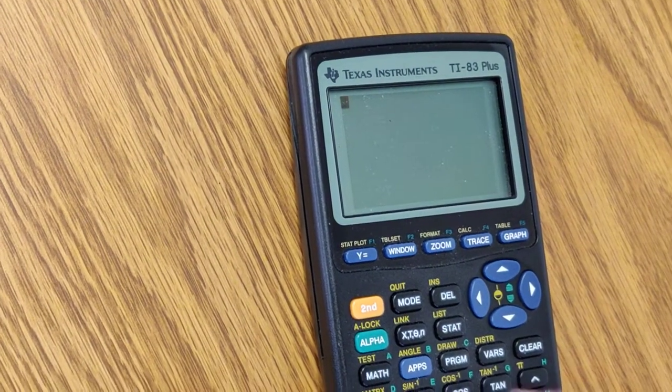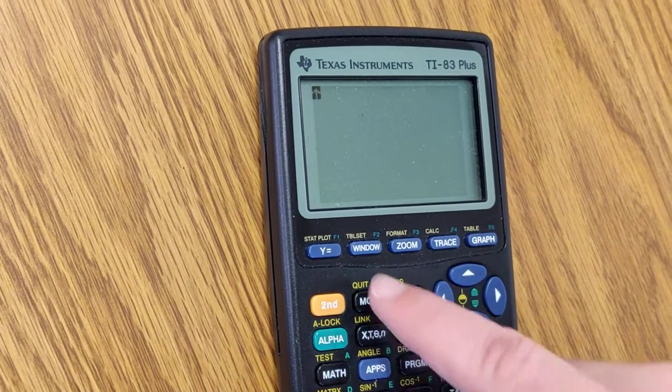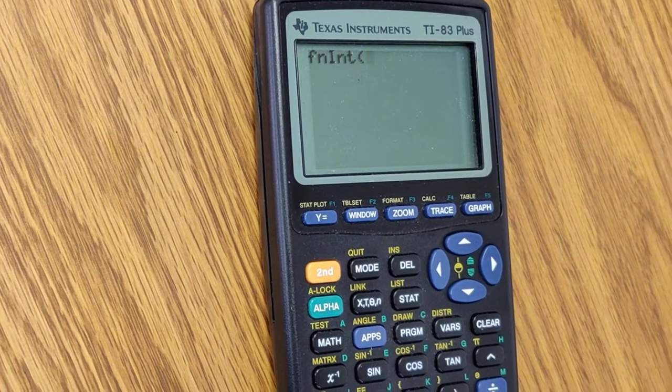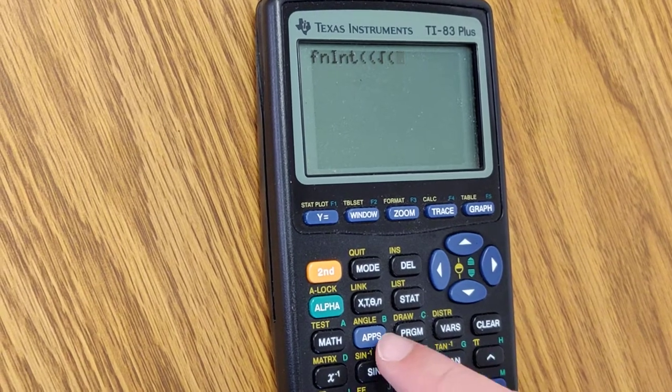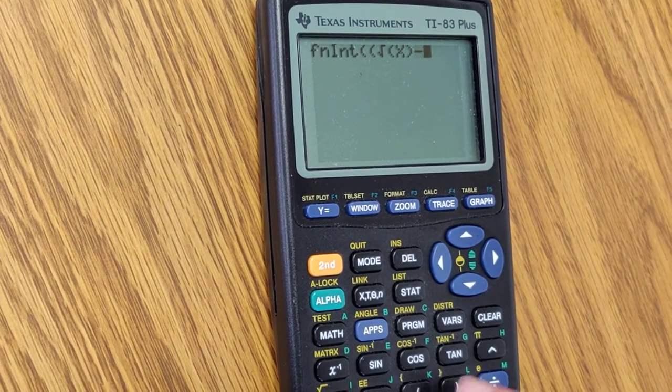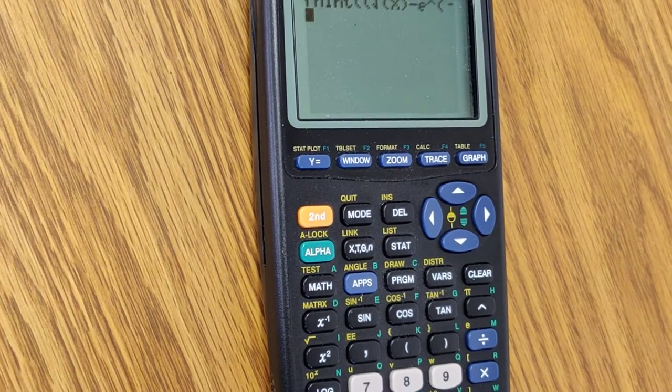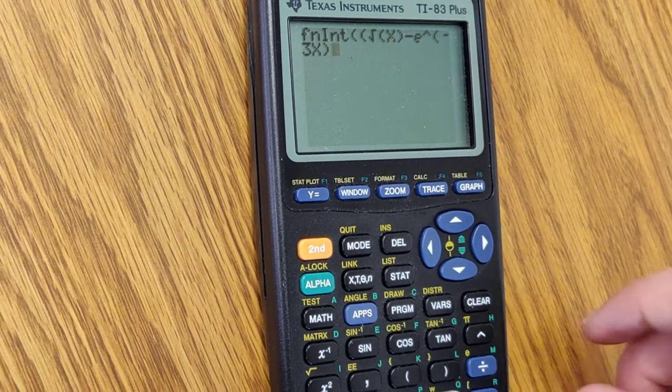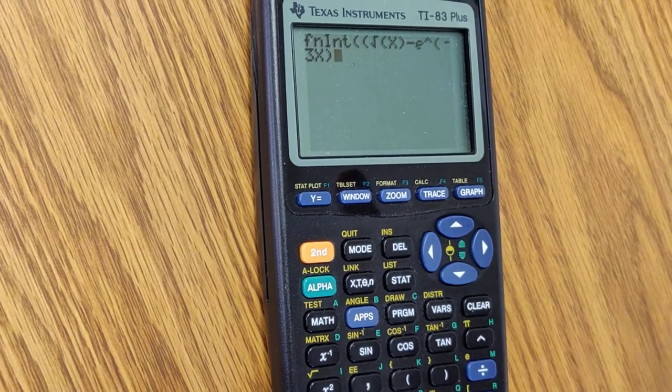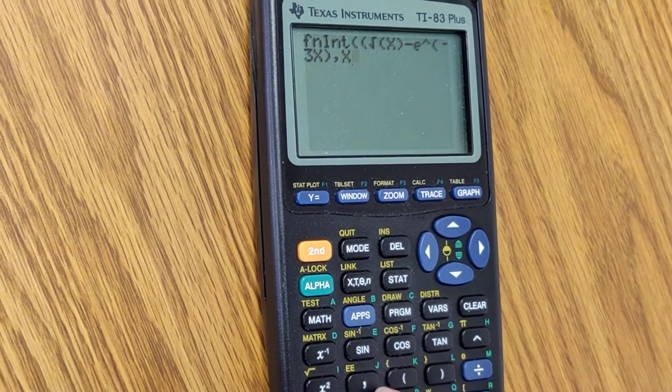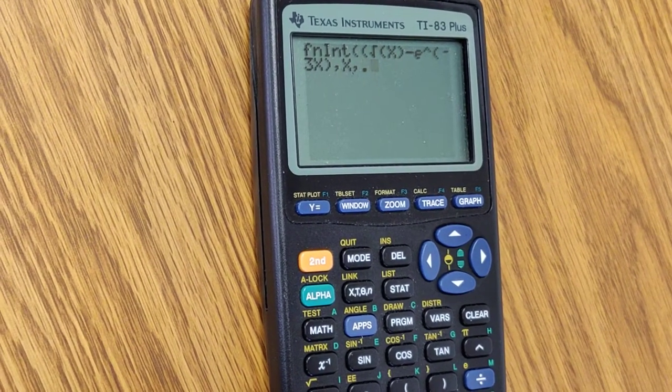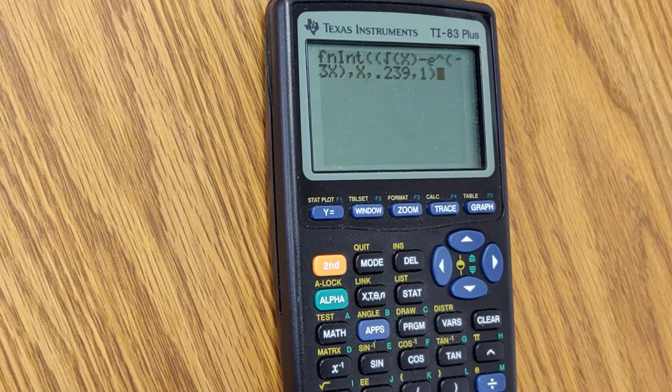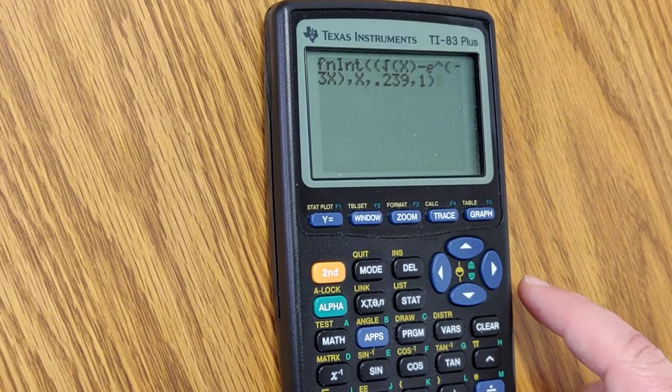Let's do this. We're going to press 2nd and quit. We're going to press math, up key. We're going to go to FN integrate. And we're going to enter parentheses, 2nd, square root of x, close parentheses, minus 2nd, e to dx. We're going to enter negative 3x, close another parentheses, and then comma x comma 0.239 comma 1, close parentheses. I'm hoping that I did not forget a parentheses. I really am. Let's press enter.